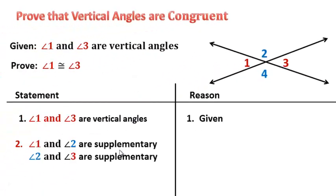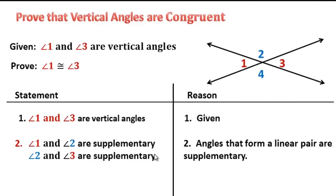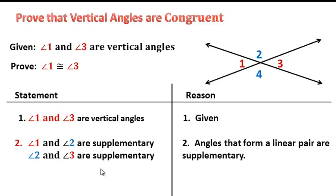Let's go ahead and put in the next line of our proof. That is what we just talked about: angle one and angle two are supplementary, and angle two and angle three are supplementary. The reason is: angles that form a linear pair are supplementary.